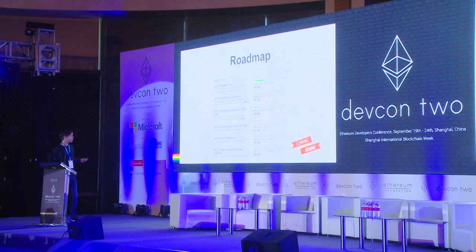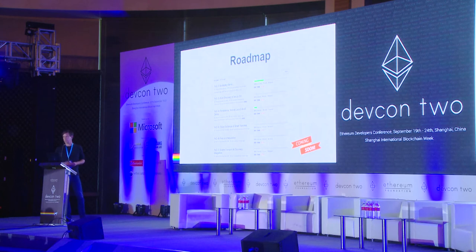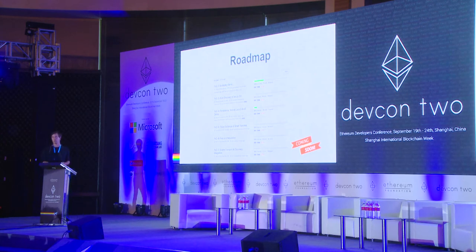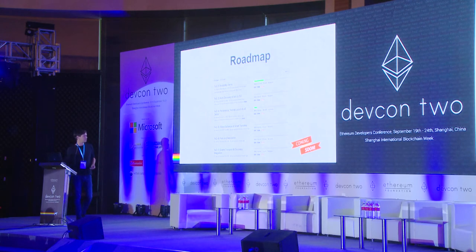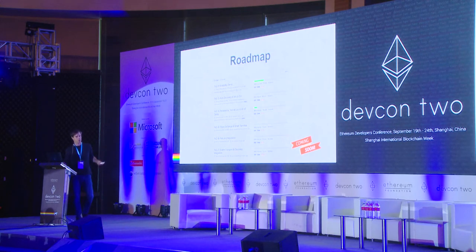We have a roadmap. The most important part is probably the routing problem, which is still to be solved in a scalable way. Currently we require building a view of all the channels in the system, which would not scale to a large IoT setup. But otherwise we hope to have a beta of the Raiden network on the Ethereum mainnet this winter.